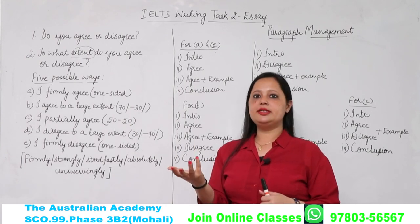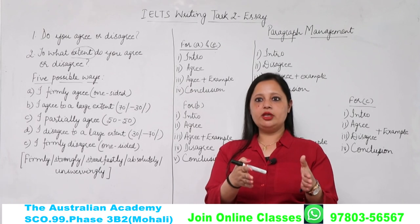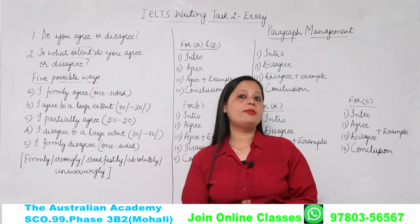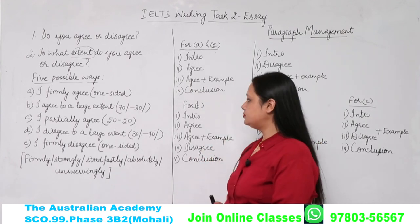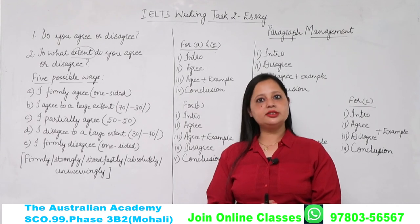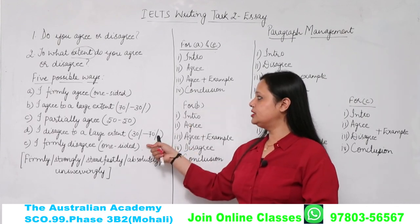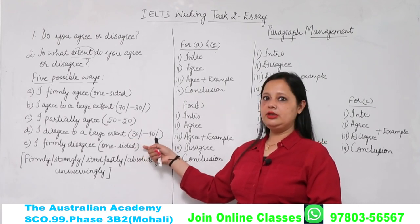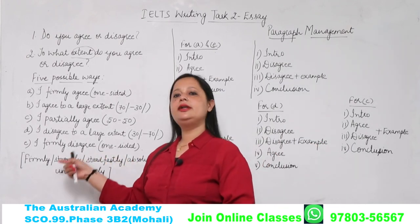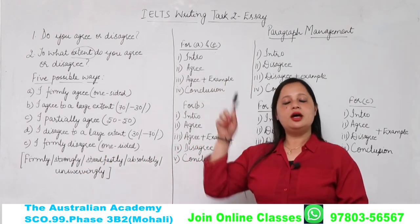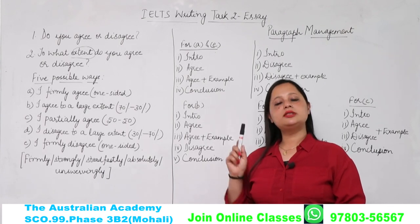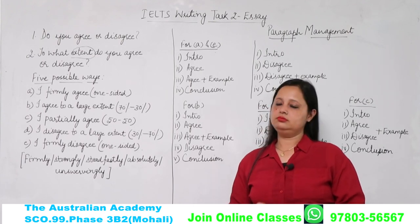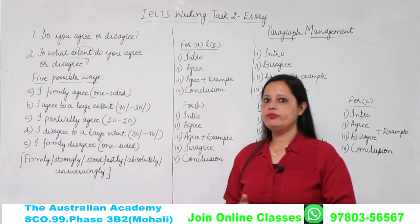Third option: I partially agree. Partially agree means fifty-fifty — aap chahe partially agree karlo ya partially disagree karlo, ek hi baat hai. Kuch aapne agree ke baare mein likhna hai aur utne hi ideas disagree ke liye bhi banane hain. Fourth: I disagree to a large extent — iska hi opposite hai, disagree ke zyada points likhenge aur agree ke kam. Fifth: I formally disagree — again single-sided, sara ka sara disagree ke baare mein likhenge, agree ke baare mein kuch bhi nahi likhna.